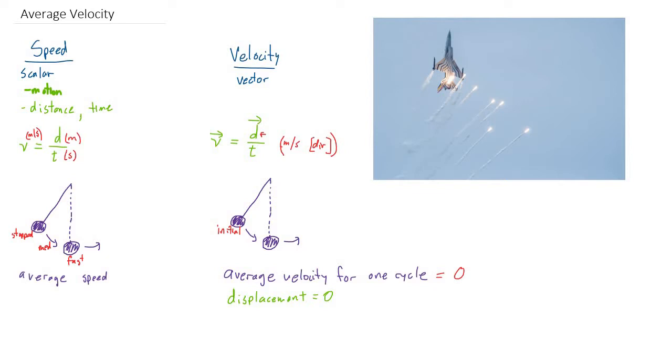it would have some displacement and some average velocity. But if you look at a full cycle all the way back, it has an average velocity of zero because it has a displacement of zero.